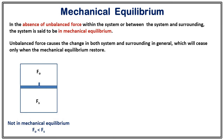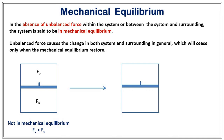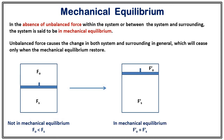In that case the piston will move, causing changes in the system and surrounding. It will stop when new forces arise such that both forces are equal. Once the force in both system and surrounding are the same, there is no unbalanced force, and the system is in mechanical equilibrium. If left undisturbed, any system will automatically try to reach mechanical equilibrium.